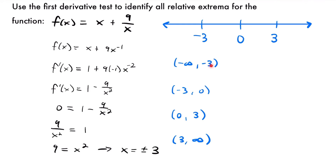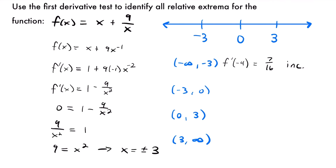Starting with the first interval, I'll plug in negative 4. f prime of negative 4 equals 1 minus 9 divided by negative 4 squared, which is 1 minus 9 over 16, which equals 7 sixteenths. That's a positive value, so the function is increasing on this interval. We put a plus sign for that interval on our number line.